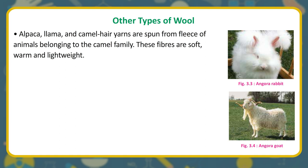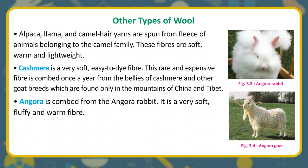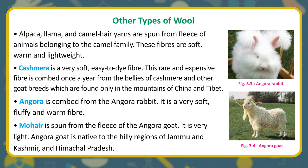Other types of wool: Alpaca, llama, and camel hair yarns are spun from the fleece of animals belonging to the camel family. These fibers are soft, warm and lightweight. Cashmere is a very soft, easy-to-dye fiber. This rare and expensive fiber is combed once a year from the bellies of Kashmir and other goat breeds found only in the mountains of China and Tibet. Angora is combed from the angora rabbit — it is a very soft, fluffy and warm fiber. Mohair is spun from the fleece of the angora goat. It is very light. The angora goat is native to the hilly regions of Jammu and Kashmir and Himachal Pradesh.